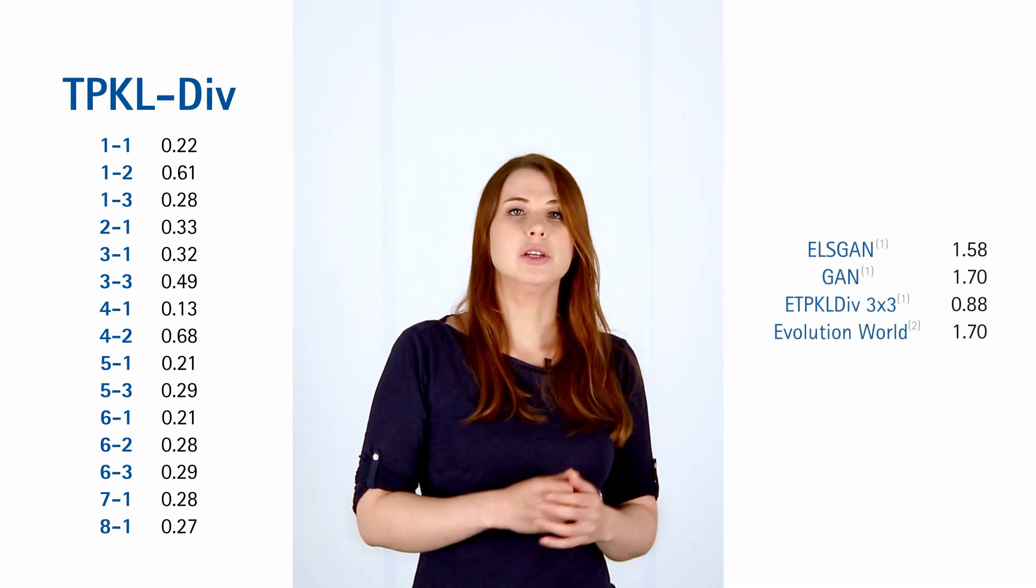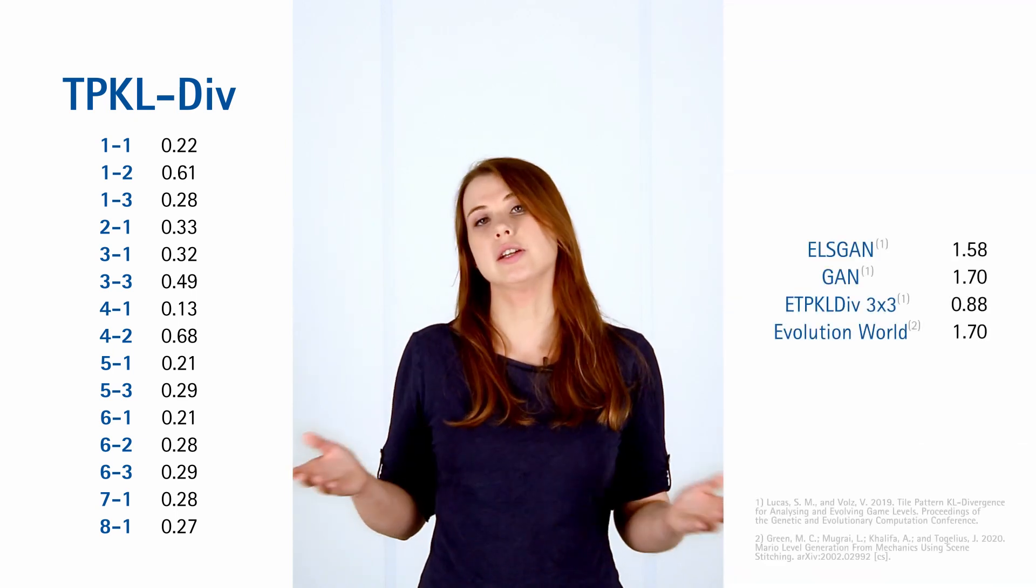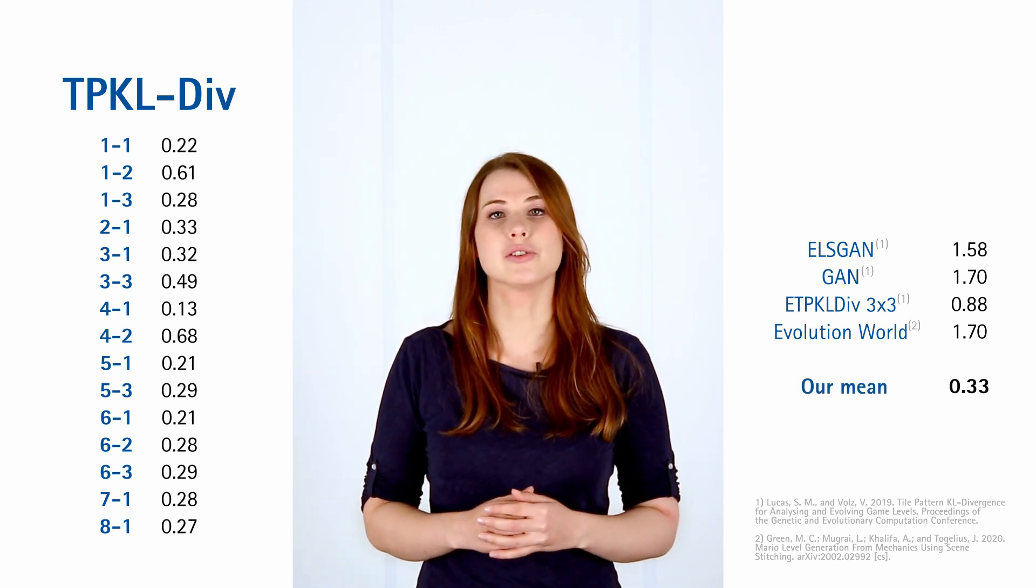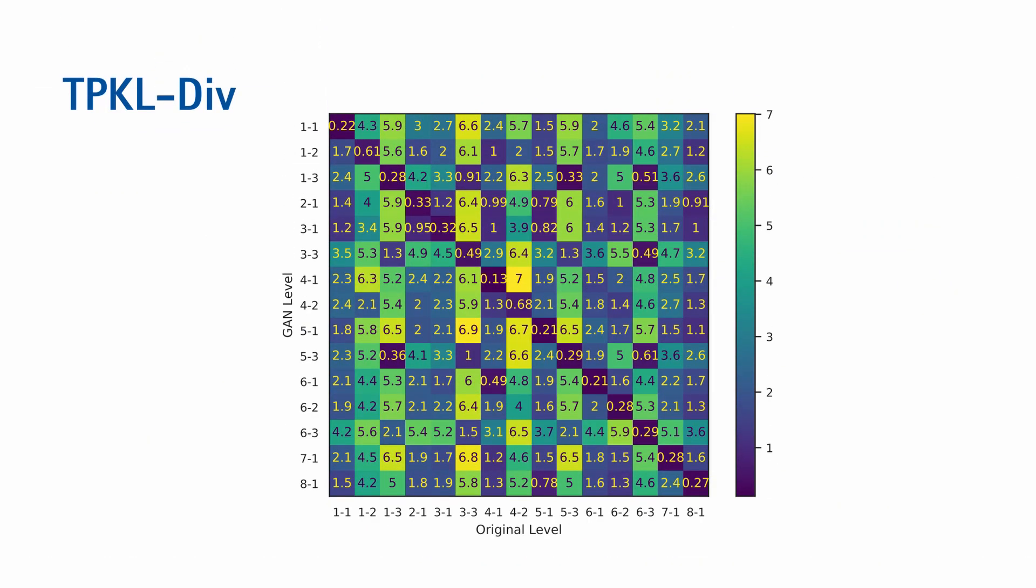These are the results. For comparison, here are the mean TPKL divergences provided in other papers. We can clearly see that TOAD-GANs capture the original tile patterns almost perfectly. We can also calculate the TPKL divergence between our generators and levels they were not trained on. This shows that certain levels have a large similarity in patterns. These levels belong to the same type of level and therefore have similar patterns.